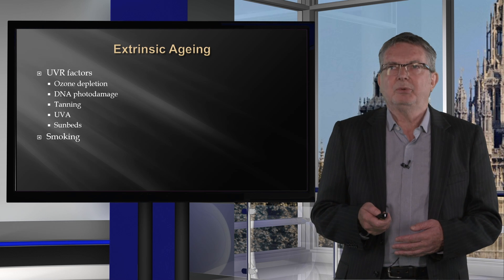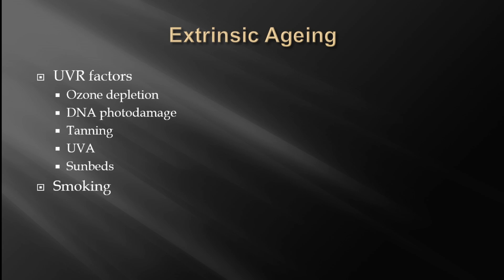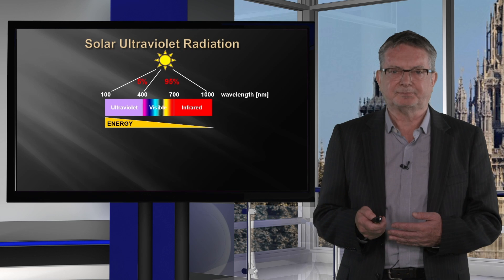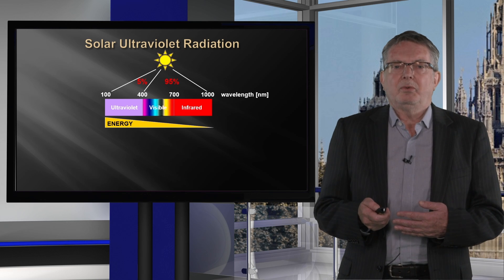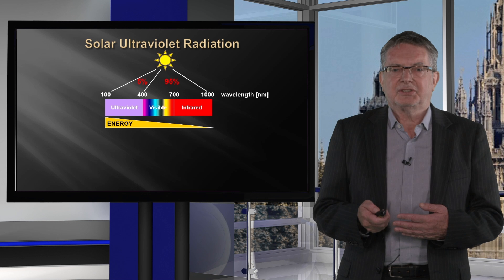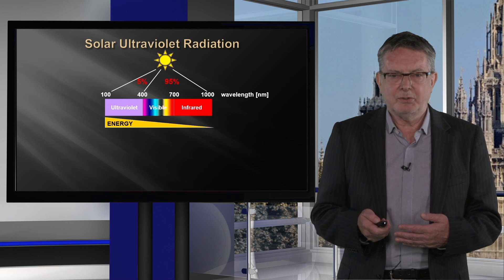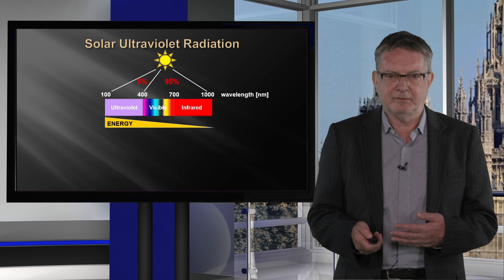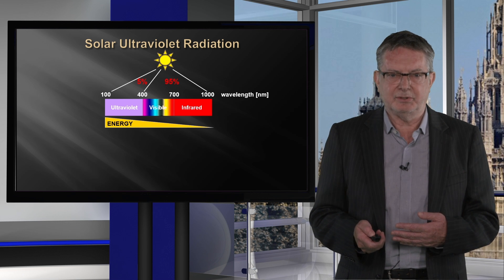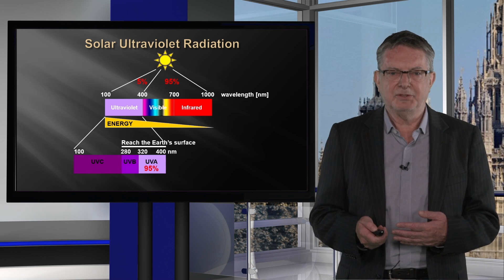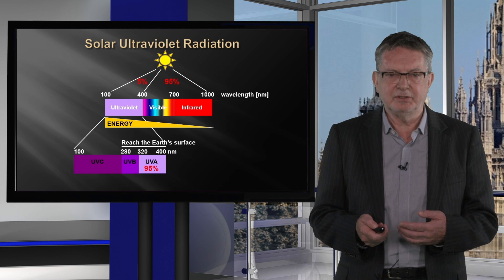Topics to cover include UV-related factors, ozone depletion, DNA photo damage, tanning, UVA, and sunbeds, as well as a brief mention of smoking. The sun emits ultraviolet, visible, and infrared radiation. Focusing on the ultraviolet part of the spectrum, it is broken down into three components: UVC, UVB, and UVA.